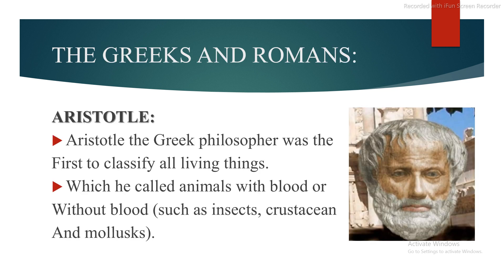Regarding the Greeks and Romans, first I am going to discuss about Aristotle. Aristotle, the Greek philosopher, was the first to classify all living things, which he called animals with blood or without blood, such as insects, crustaceans, and mollusks.